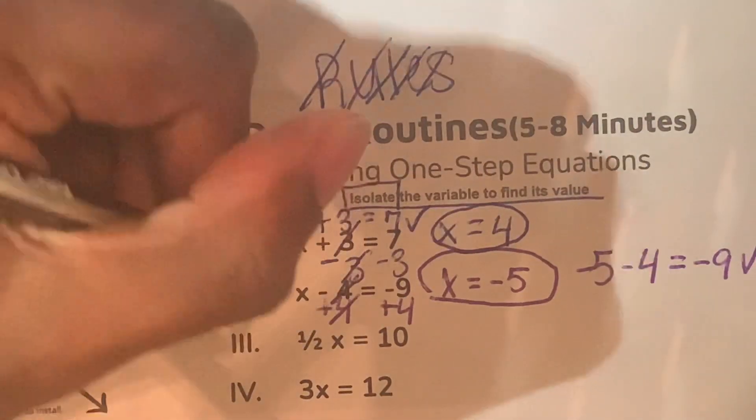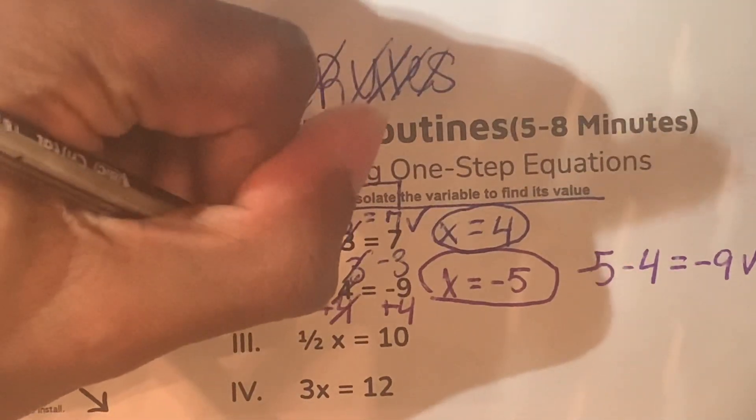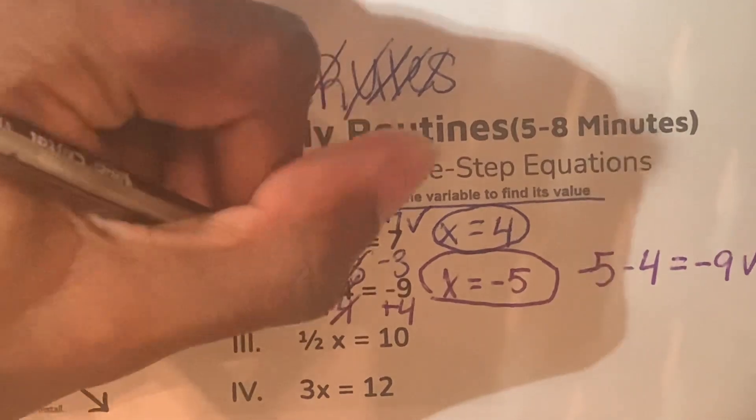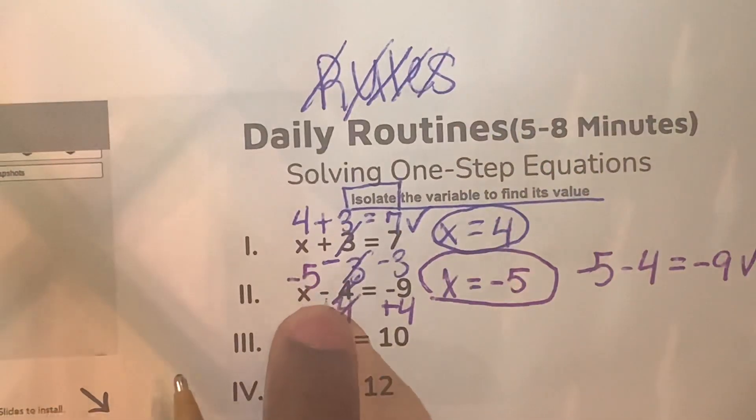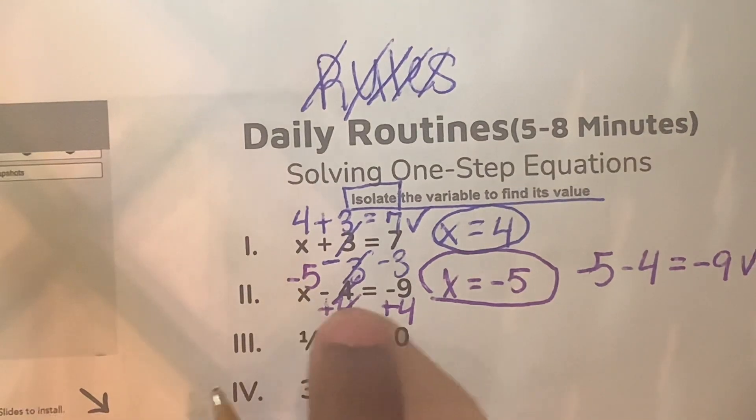So all we did was we replaced the x here with the negative 5, and then we subtracted 4 from negative 5, which is what our original equation had, negative 5 minus 4, and that's equal to negative 9. So this proves true.